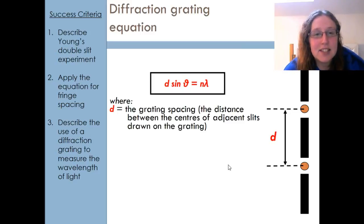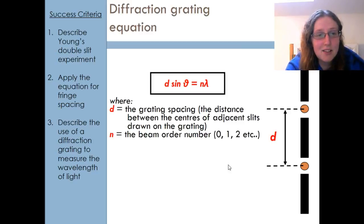d is the spacing or the distance between the centers of the adjacent slits on the grating. Remember I told you you're often told that you have 500 lines per millimeter. What I'd need to do is take that 1 millimeter and divide it by 500, and that would give me the spacing between each of those lines. You'll always be given the lines per millimeter and you'll have to turn it into the grating spacing. n is the beam order number that I'm interested in—the 0 beam, 1st order, 2nd order, 3rd order.